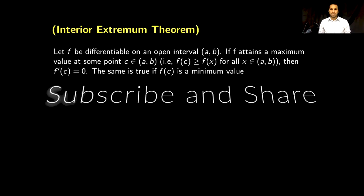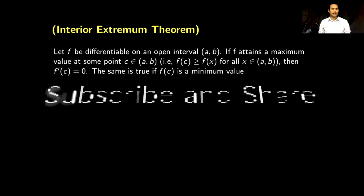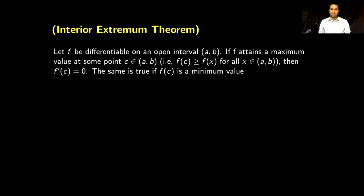Here is the statement of this theorem. Let f be a differentiable function on an open interval (a, b), and f attains a maximum value at a point c which belongs to the open interval (a, b). Then the derivative of the function at c must be 0. This statement is also true if f(c) is a minimum value.